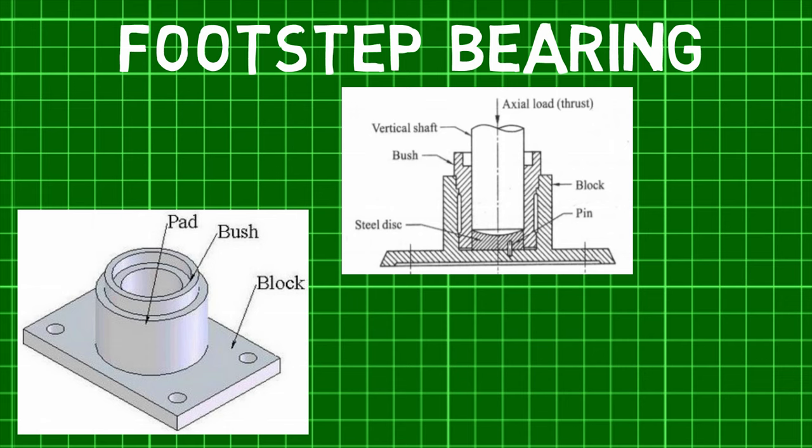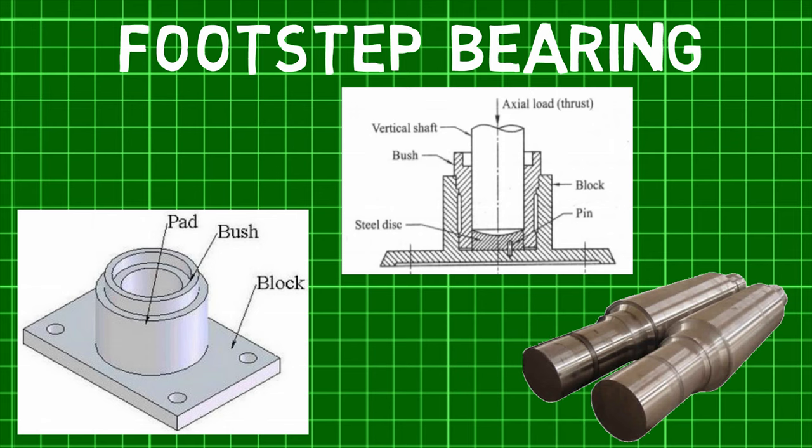The collar of the bush is made hollow to serve as an oil sump for lubrication of the bearing. Since it is subjected to heavy thrust loads along the axis of the shaft and operates without clearance between the conjugate parts, an adequate supply of oil to the rubbing surfaces is extremely important for footstep bearings. Unlike a pedestal bearing, a footstep bearing can only be placed along the bottom of the shaft.